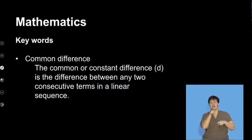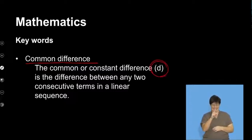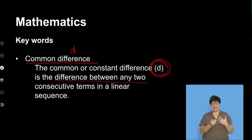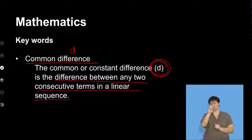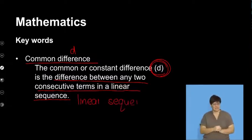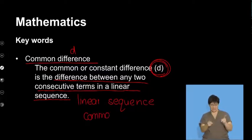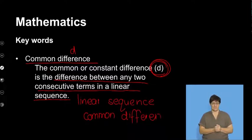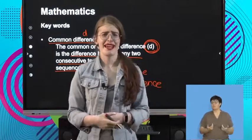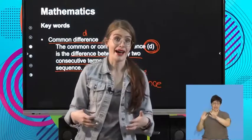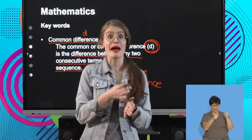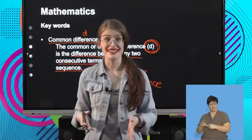The next thing I'm going to revise with you is that of a common difference. The common or constant difference is denoted with a D. So if you see a D in patterns, we're talking about a common difference. The common difference is the difference between any two consecutive terms in a linear sequence. Please remember that a linear sequence has the property of a common difference. For example, if I had a pattern going 3, 6, 9, 12, each time I am adding 3, so my common difference is 3.